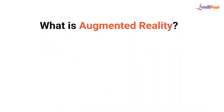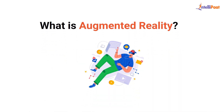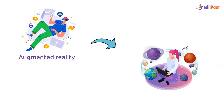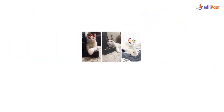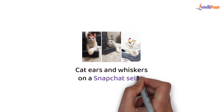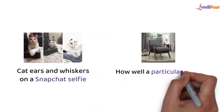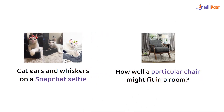What is augmented reality? Augmented reality systems show virtual objects in the real world, like cat ears and whiskers on a Snapchat selfie, or how well a particular chair might fit in a room.